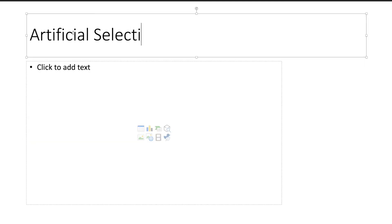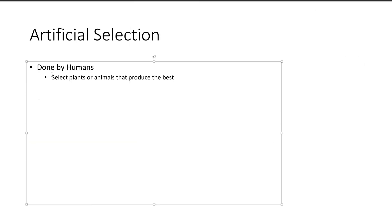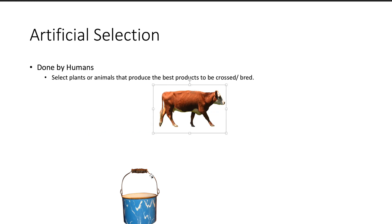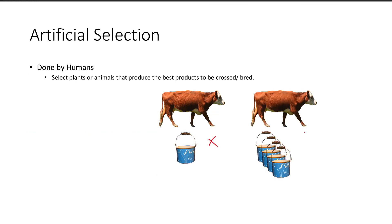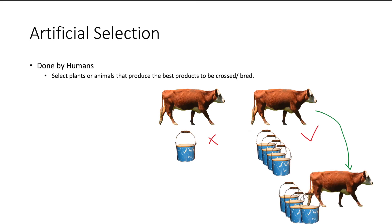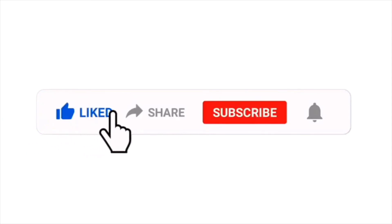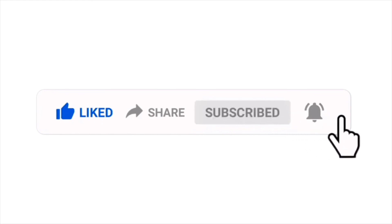Of course, alongside natural selection there is also artificial selection, where humans execute selective breeding — selecting organisms for their desirable traits. For example, plants or animals on a farm that produce the greatest commodity will be selected to pass on their genes, in hopes that offspring will do the same. And that is all for today. Hope you enjoyed this video — give it a like, subscribe, and share it with somebody that needs to see this. See you in the next video!